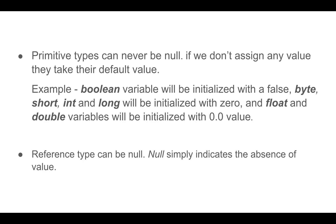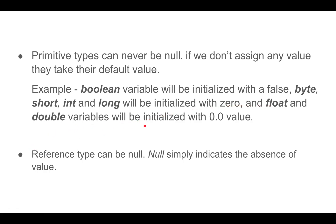The last difference for this tutorial: primitive types can never be null. When we declare any primitive and don't assign any value, they take their default value. For example, for boolean the default value is false; for byte, short, int and long the default value is zero; for float and double the default value is 0.0. Reference types can be null — if we don't assign any value to a reference type it is simply null.